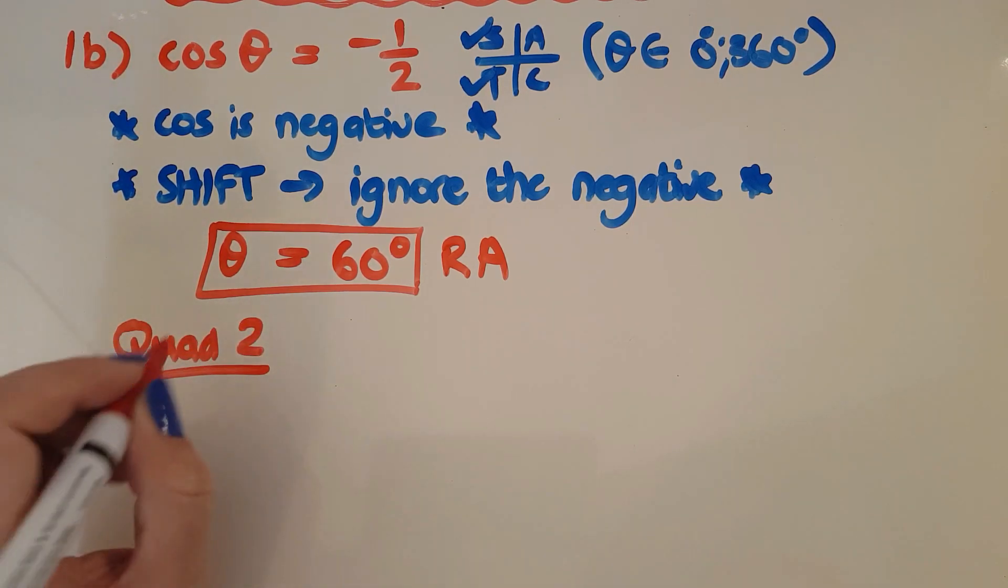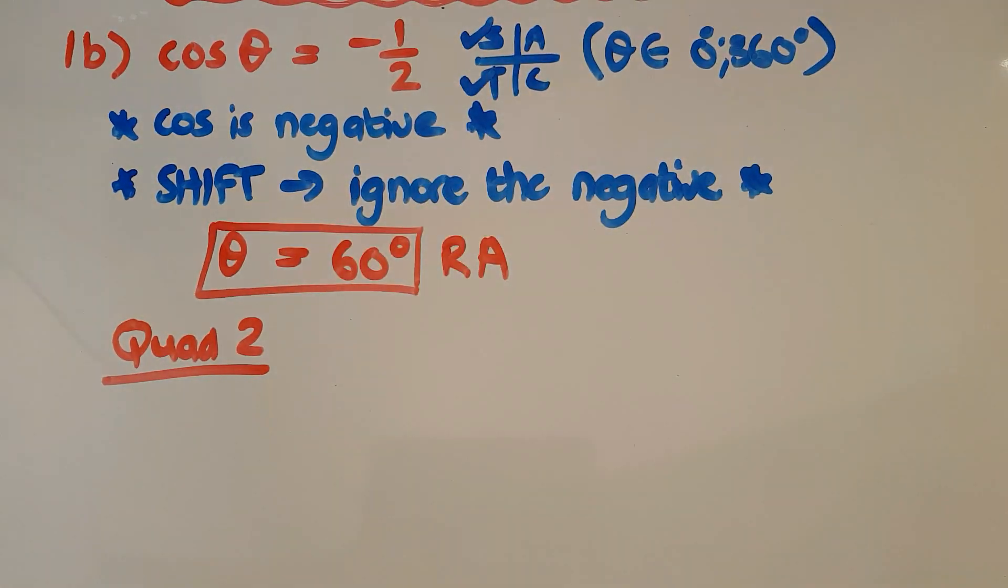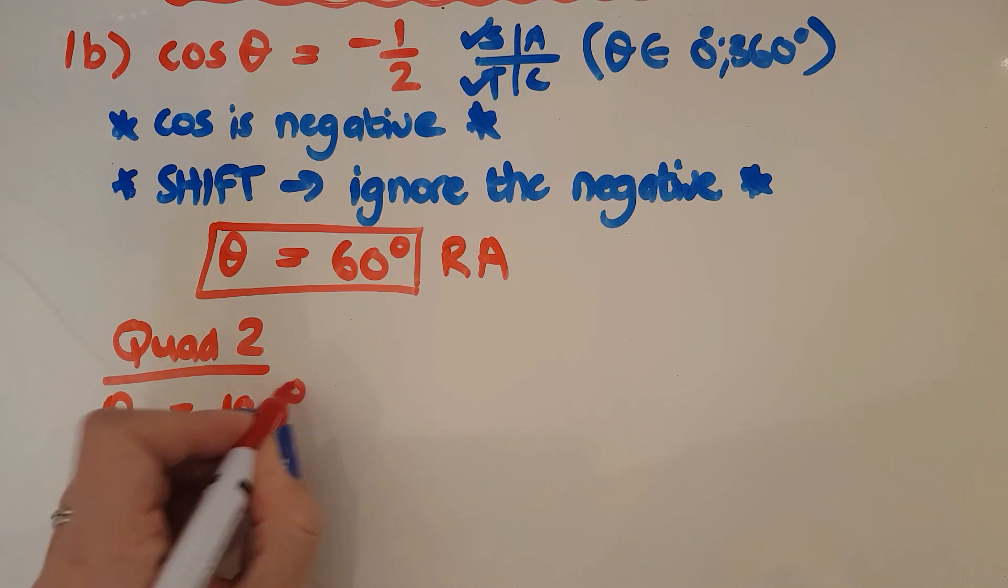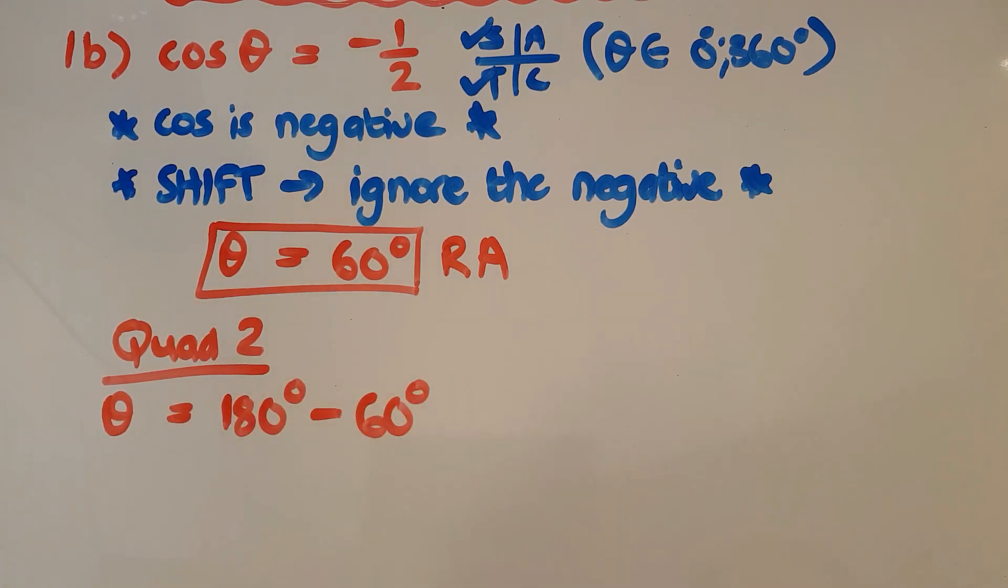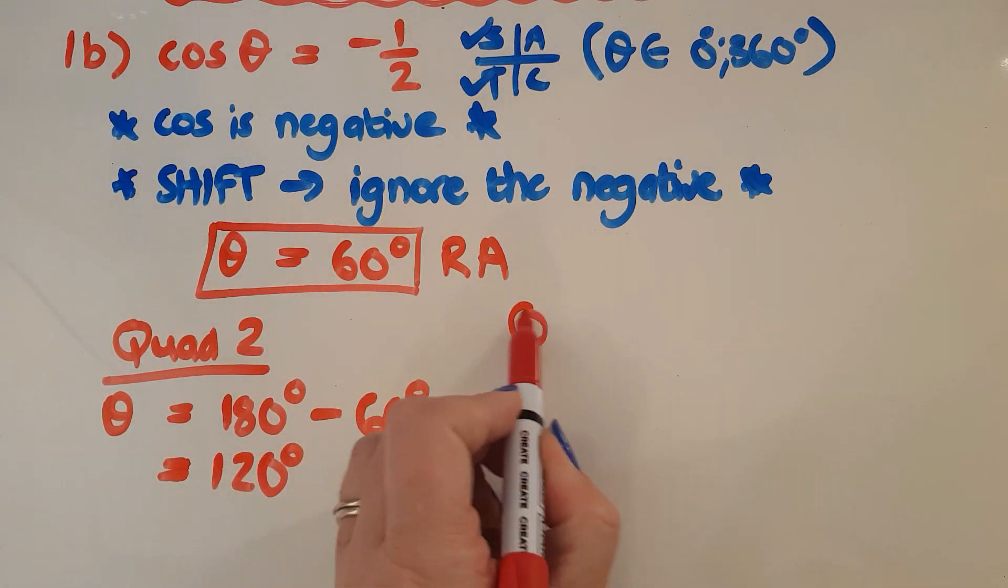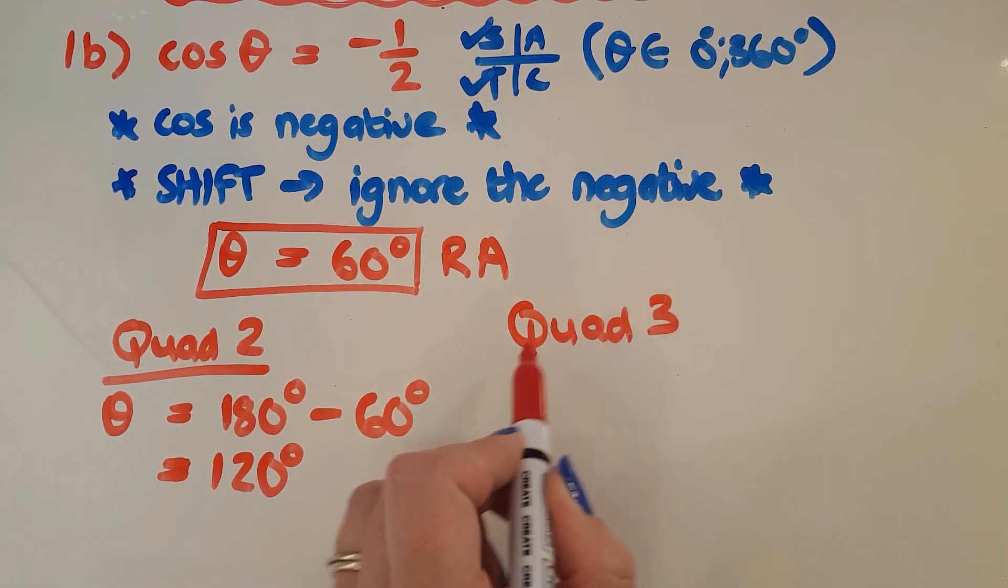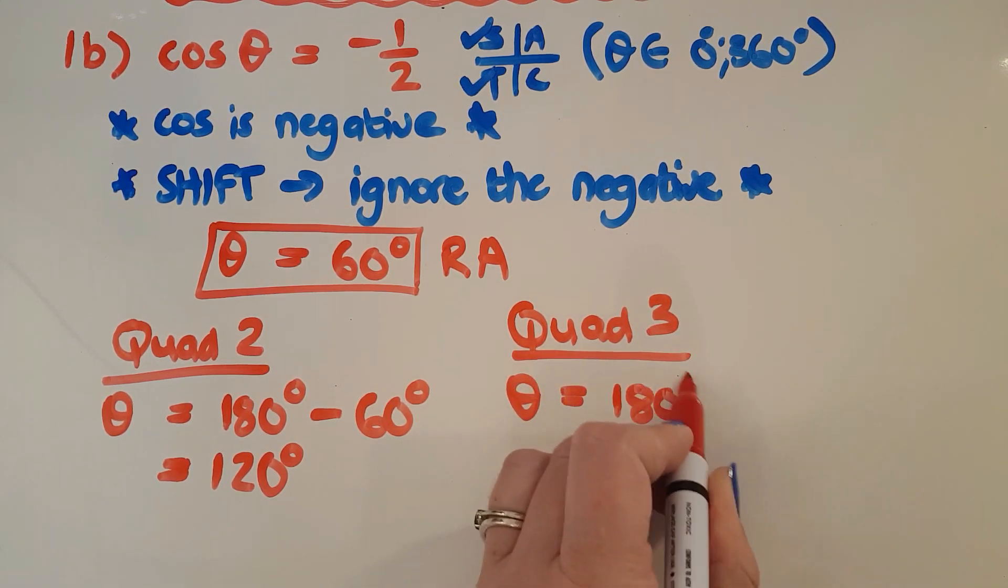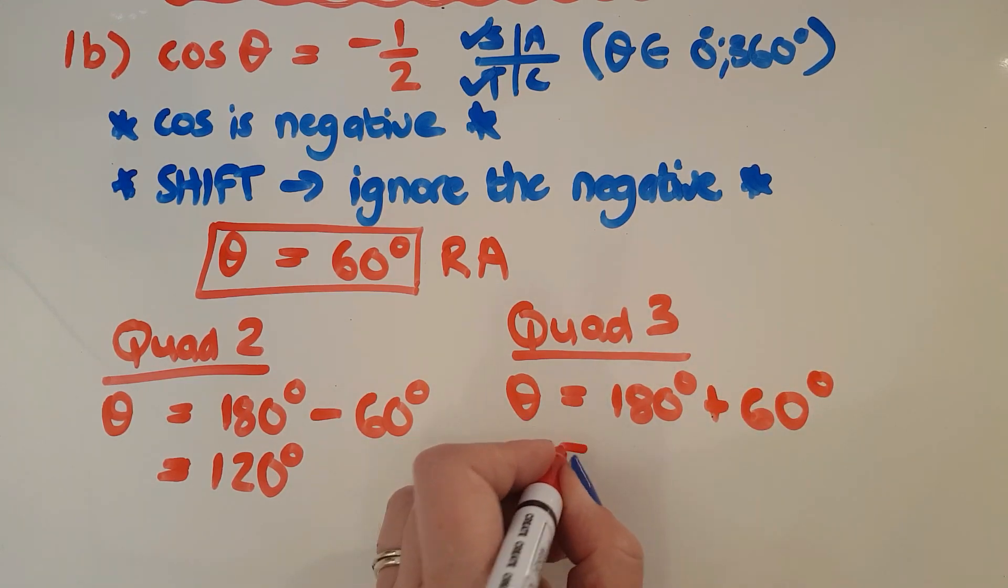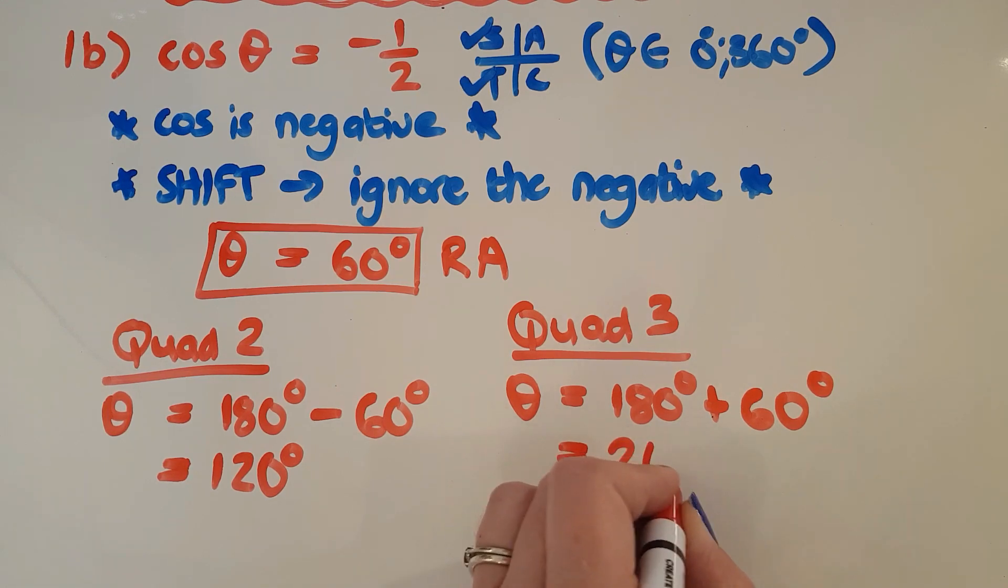In quad two, quad two is the 180 minus. So I've got to deal with a place where cos is negative. So and then I'll finish that up and get my answer. So theta is 120 degrees. And in quad three, quad three is the 180 plus quadrant. So theta is 180 plus my reference angle, which gives me 240 degrees. And there are my two answers.